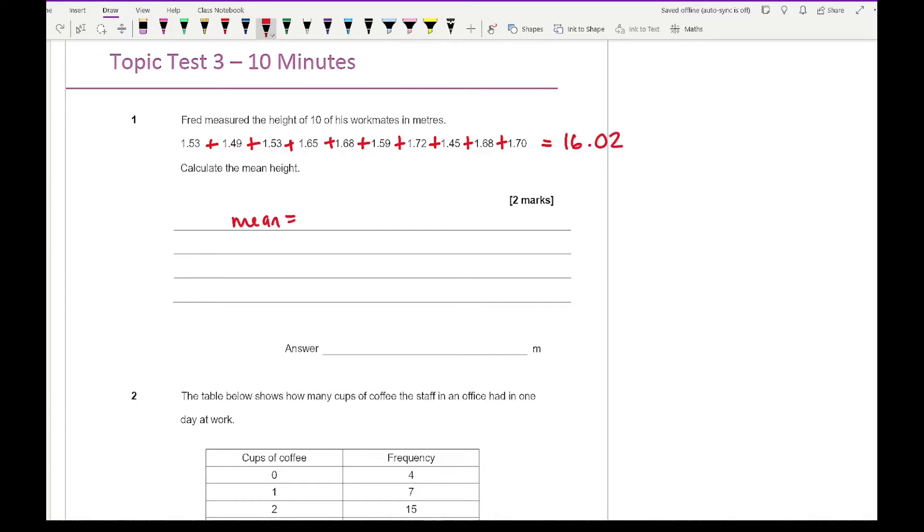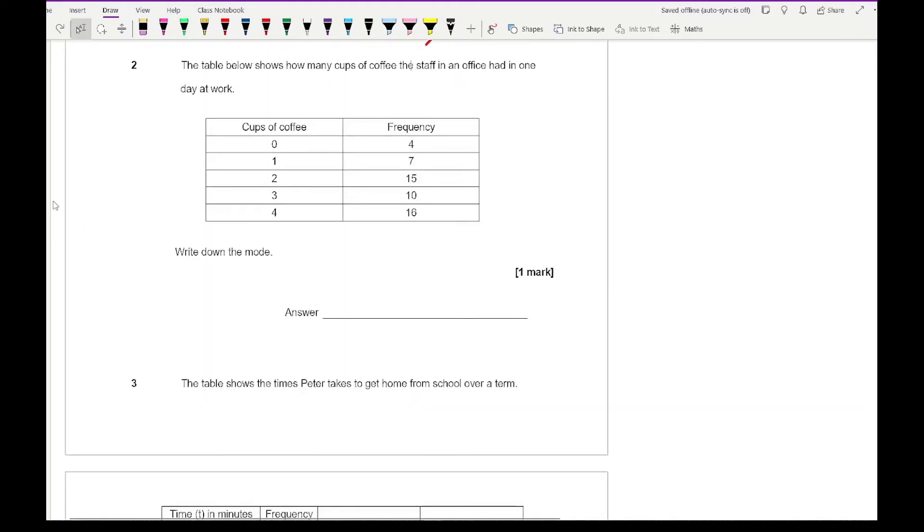Then from this to work out the mean, it's going to be the total sum which is 16.02 divided by the total number of people which is 10. So if I then divide those two numbers together, I get 1.602. I'll probably just write down all the numbers rather than trying to round that number off.